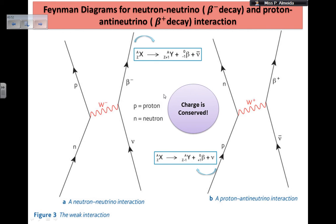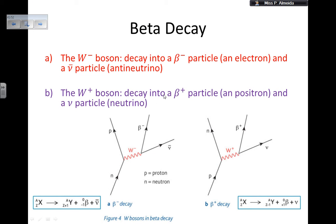This is just showing that the charge is conserved. We know that Feynman diagrams are correct — that the interactions can occur — if the charge is conserved. Now, they can ask me for the same equation. That's the same equation for the beta decay, same for the positron decay or positron emission. For the same ones, I can have different Feynman diagrams.